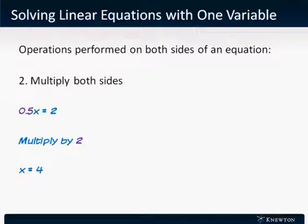Multiplication. 0.5x equals 2, so we multiply both sides by 2 to get x equals 4.